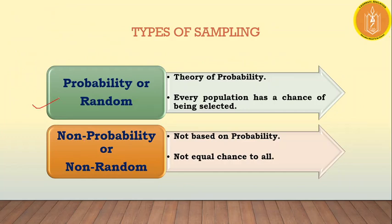There are two types of sampling. The first is probability — or random — sampling. The second is non-probability — non-random — sampling. In probability sampling, all units in a population have an equal chance of being selected. If we are not giving equal chance and there is biasness in the selection, then the sampling is non-probability.